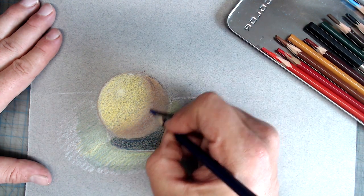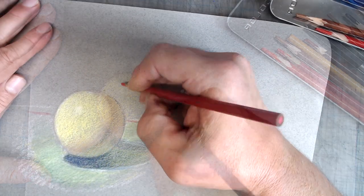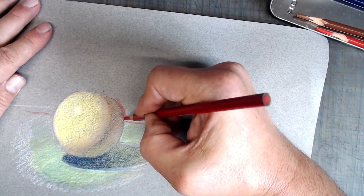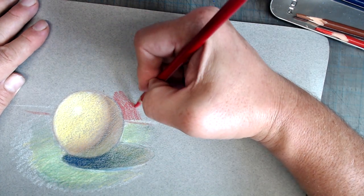Working on toned paper has some advantages. Because I'm starting with gray, I'm able to build the lights and darks at the same time, making it easier to create a full range of values, and to create the illusion of form. Color is also easier to see correctly on gray paper.